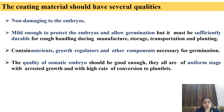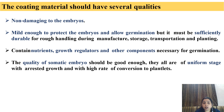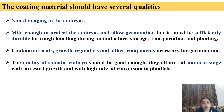The coating material used for encapsulation should have some qualities. It should be non-damaging to the embryos, mild enough to protect the embryos and allow germination, but it must be sufficiently durable for rough handling during manufacture, storage, transportation, and during plantation. It should contain nutrients like growth regulators and other components necessary for germination. The quality of somatic embryo should be good enough.